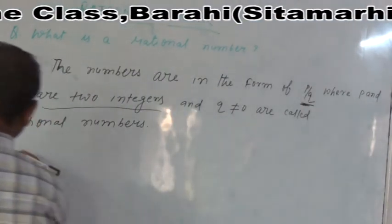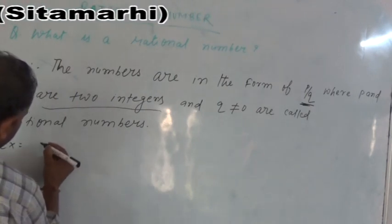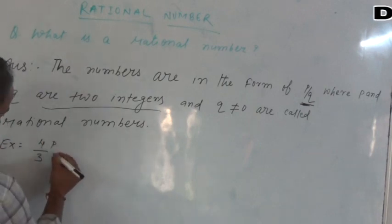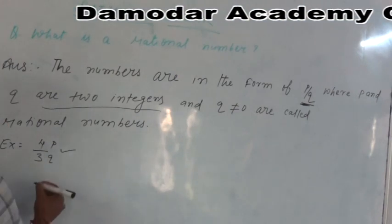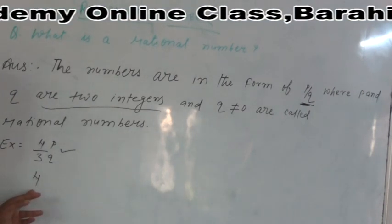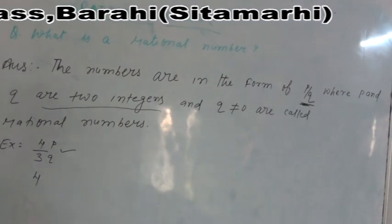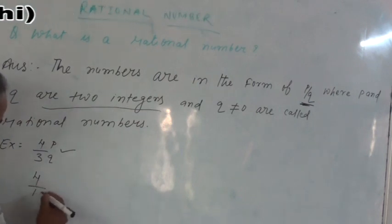For example, 4/3. Here P is 4, Q is 3, so it is a rational number. For example, 4 is also a whole number, 4 is also an integer, natural number, but 4 is also a rational number because we can write it as 4/1, so 4 is a rational number.